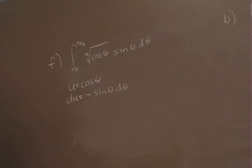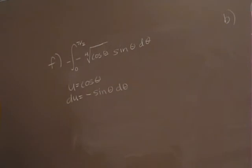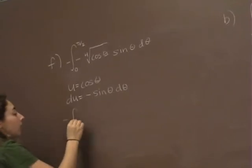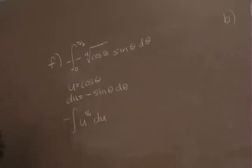Do I have a negative sine of theta d theta? No. But I can creatively get one by multiplying negative 1 times negative 1. So now I'm going to substitute it in and I'm going to end up with negative the integral of u to the 1/4th power du. But I need to change these limits.